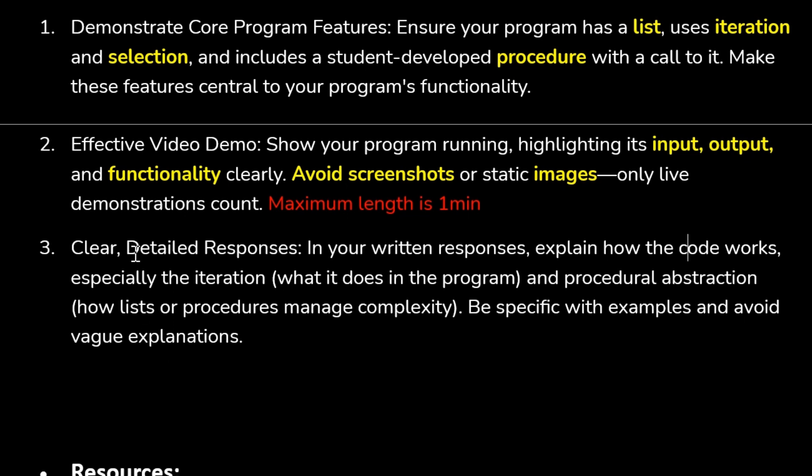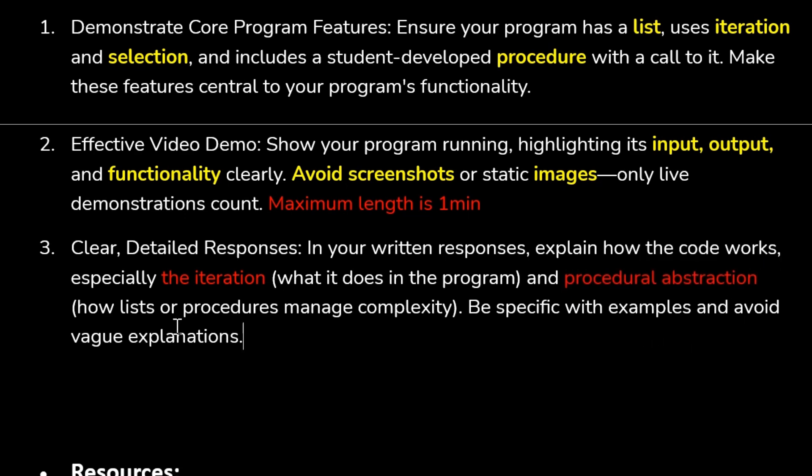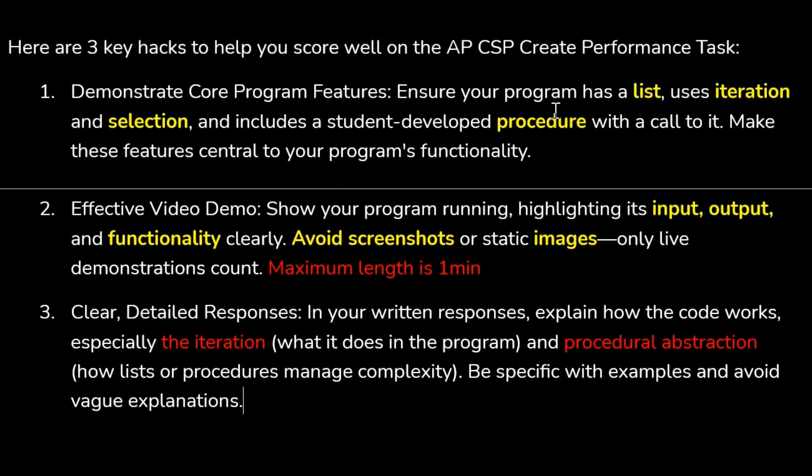The third thing is having a detailed response. In your written responses, explain how the code works, especially the iteration part. This is so important because many students miss this. In detailed response, you need to mention how iteration works, how procedure abstraction works, how your function is working, how you are implementing abstraction. How list or procedure manages complexity. So whatever the points we have discussed like list, iteration, selection, procedure—how you are using them in your project, you need to write all those things. So these are the three hacks which will make you succeed.